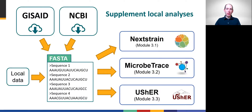Knowing how to search public genome repositories and download relevant SARS-CoV-2 sequences can provide valuable context to analyses of local data generated in individual public health laboratories. This can be particularly useful for laboratories just getting started with only a few sequences, or in jurisdictions where sequencing is conducted by multiple institutions. Consensus genome assemblies in FASTA format from different sources can be combined for analyses using most phylogenetic software, including Nextrain, MicrobeTrace, and Usher, which are highlighted in other modules of this toolkit.